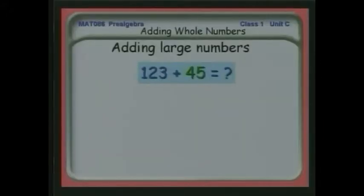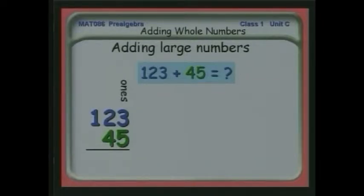Let's look at adding larger columns of numbers. What about 123 plus 45? Well, kind of big to do on your fingers. So let's look at how we would do this. First, we would put these things in line, adding up the ones column, the tens column, and the hundreds column.